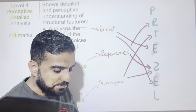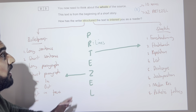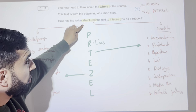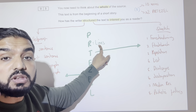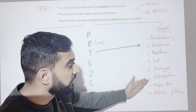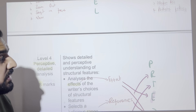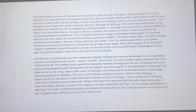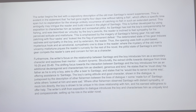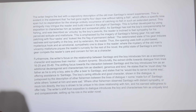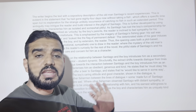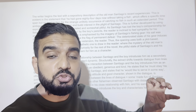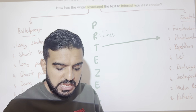Quick recap: for this question we're referring to the whole source, looking at how the writer used structure to create interest, writing two pretzel paragraphs, and referring to lines — maximum five. In the first technique try to pick from the bulletproof list, and when you zoom in try to pick from the stretch list. Here is a model paragraph published by AQA — not written by me. This student wrote two paragraphs analyzing structure, discussing shift in focus and juxtaposition, and it shows that two clear paragraphs is more than enough.